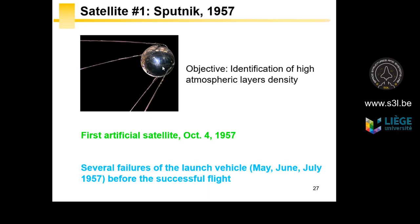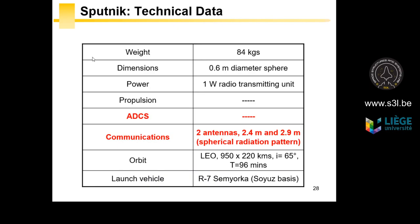Sputnik is a sphere with two antennas. The USSR was trying to act smarter than the USA, but at the bottom of it all, it had a scientific goal: to identify the different layers in the upper atmosphere of the Earth. Sputnik performed an outstanding, disruptive breakthrough in spite of several failures before the successful flight.